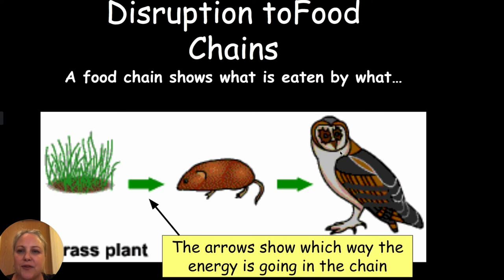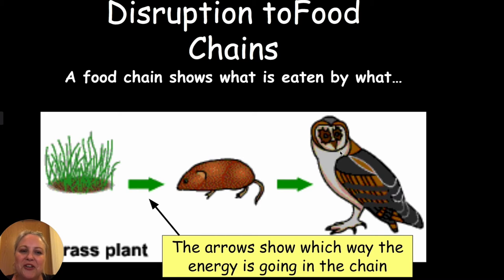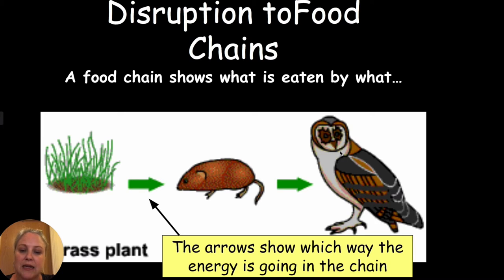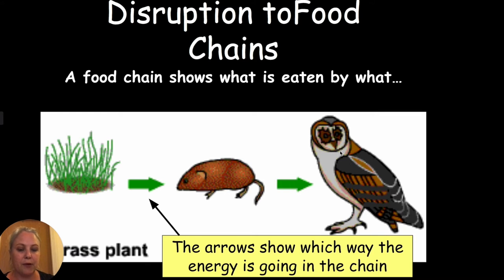Hi, welcome to today's lesson all about food chains. In the last lesson you had a little go at making a food chain, and today we're going to look a bit more at food chains. You've met food chains before, so I want you to think about what the arrows mean. The big misconception here is that lots of people think the arrows mean what eats what, but the arrows show the flow of energy.